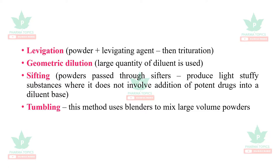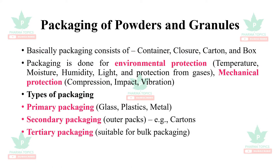Pulverization is used for soft and gummy substances; example: camphor plus alcohol. Then levigation, where the powder is added with a levigating agent and triturated. Geometric dilution is applicable when a large quantity of diluent is used. Sifting involves passing powders through sifters; it does not involve addition of potent drugs into a diluent base.